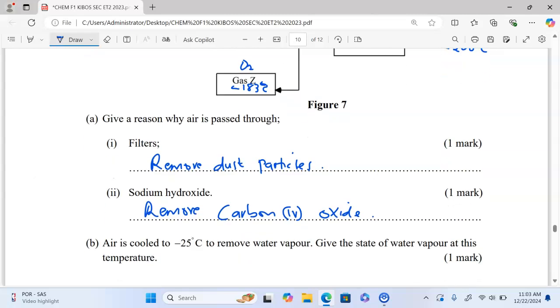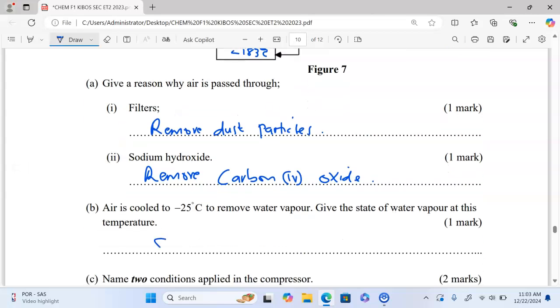Part B: Air is cooled to negative 25 degrees Celsius to remove water vapor. Give the state of water vapor at this temperature. The state of water vapor is in solid form at negative 25 degrees Celsius.